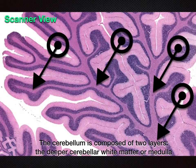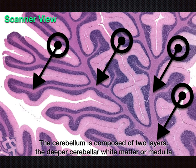The cerebellum is composed of two layers: the deeper cerebellar white matter, or medulla, as shown by the black arrows.